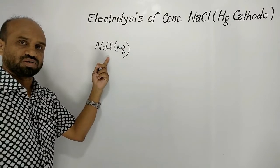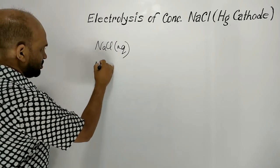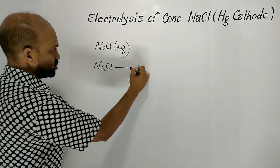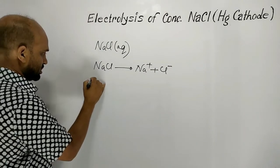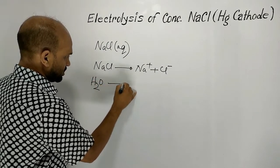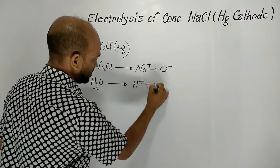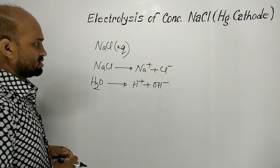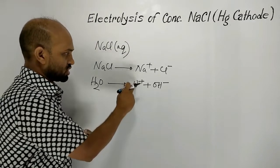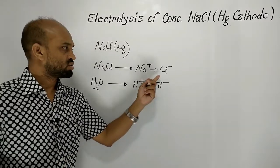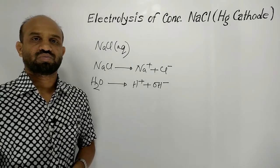Sodium chloride solution contains water. Sodium chloride ionizes to sodium ion and chloride ion. At the same time, a small amount of water ionizes to hydrogen ion and hydroxide ion. So sodium chloride solution contains two types of cations and two types of anions.